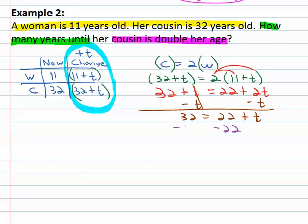Subtract the twenty-two from both sides and we find out ten is equal to the time. Ten years to be exact. In ten years the cousin will be double the woman's age.